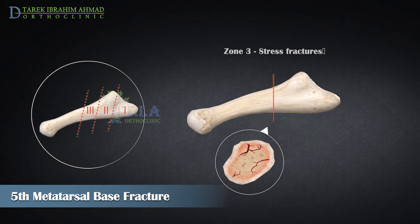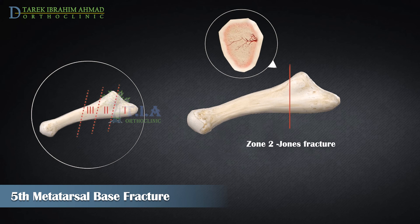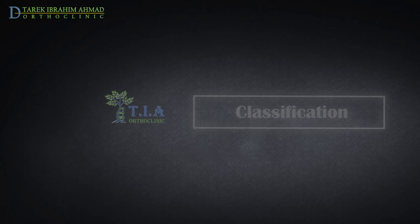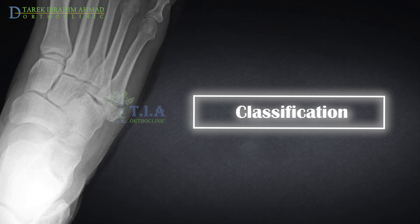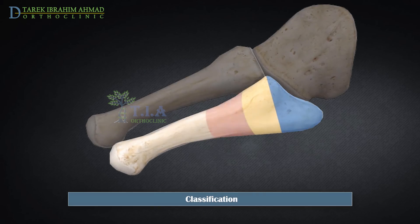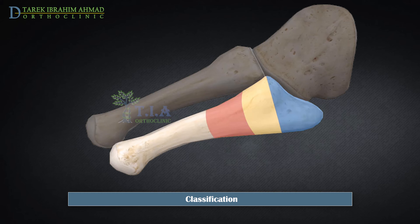The proximal diaphysis receives its blood supply solely from the nutrient artery. A fracture to the proximal diaphysis is therefore more likely to disrupt the blood supply, inhibiting healing and increasing the risk of non-union. The Zone 2 Jones fracture represents a vascular watershed area, making these fractures prone to non-union. The easiest way to distinguish among the three fracture types is to locate the medial tip of the fracture line.